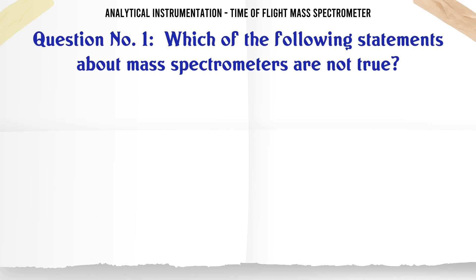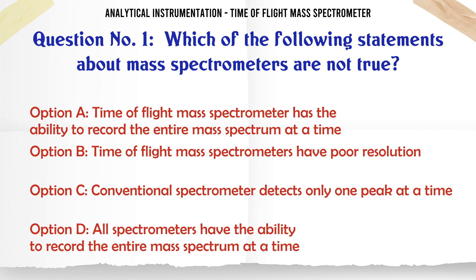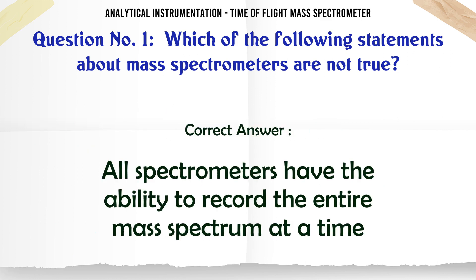Which of the following statements about mass spectrometers are not true? A: Time-of-flight mass spectrometer has the ability to record the entire mass spectrum at a time. B: Time-of-flight mass spectrometers have poor resolution. C: Conventional spectrometer detects only one peak at a time. D: All spectrometers have the ability to record the entire mass spectrum at a time. The correct answer is D: All spectrometers have the ability to record the entire mass spectrum at a time.